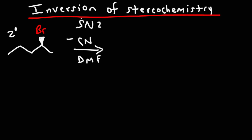Cyanide, iodide, a sulfur with a negative charge — those are relatively good nucleophiles. Now what's going to happen here: the nucleophile is going to attack the carbon from the back, expelling the leaving group. Because it approached from the backside, it's going to end up on the back. So this is cyanide, CN. This is what is known as inversion of configuration or inversion of stereochemistry.